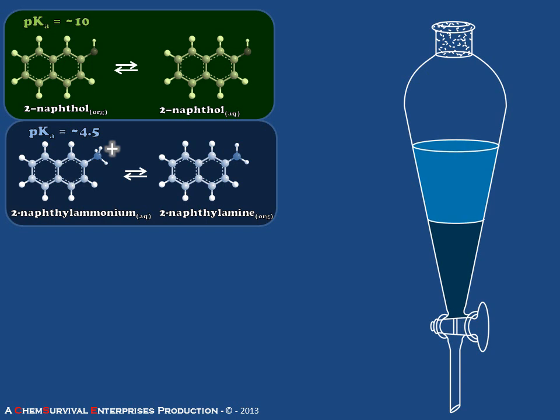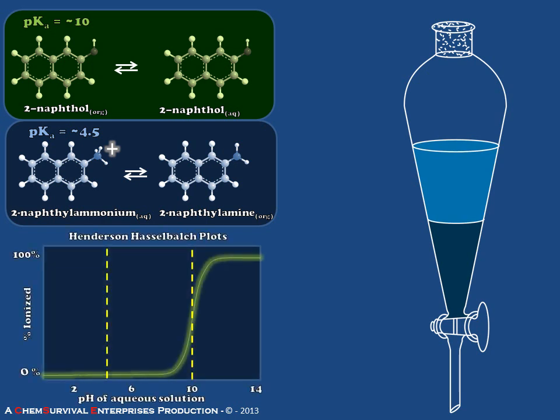But when we try to apply this kind of logic to a system of naphthol and naphthylamine, we see something quite different happens here. That naphthylamine Henderson-Hasselbalch plot has been flipped over, which means the regions where we see the greatest difference have also been changed.